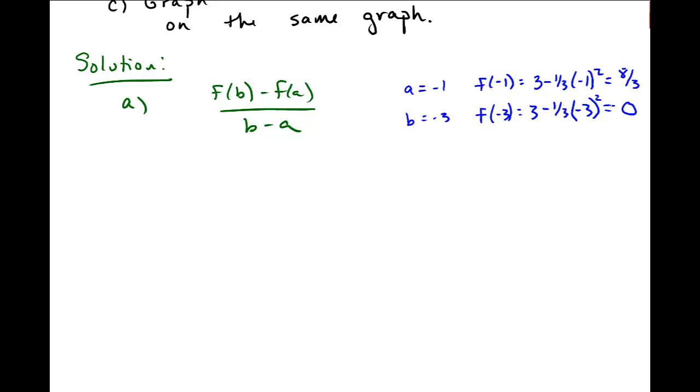So when I just plug in, I'll plug in f(b) is 0 minus 8/3 divided by b, which is negative 3 minus negative 1. I have negative 8/3 in the numerator and negative 3 plus 1 in the denominator, which should be negative 2. You can either do this on your calculator or with what you know about fractions. 8/3 divided by 2, same thing as multiplying by 1/2, should give me 4/3. And the sign should be positive. So I get a slope of 4/3, or average rate of change between these two points to be 4/3.